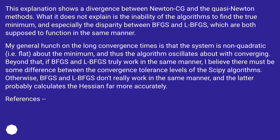My general hunch on the long convergence times is that the system is non-quadratic, i.e. flat, about the minimum, and thus the algorithm oscillates about without converging. Beyond that, if BFGS and LBFGS truly work in the same manner, I believe there must be some difference between the convergence tolerance levels of the SciPy algorithms. Otherwise, BFGS and LBFGS don't really work in the same manner, and the latter probably calculates the Hessian far more accurately.